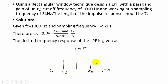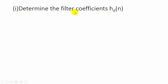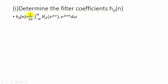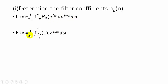We have to design a filter based on this. First, we determine the filter coefficients hd(n) from the desired frequency response. hd(n) is given by (1/2π) × integral from −π to π of Hd(e^jω) multiplied by e^(jωn) dω. From the given specifications, only for the range −2π/5 to 2π/5 will the response equal 1; in all other cases it equals 0.